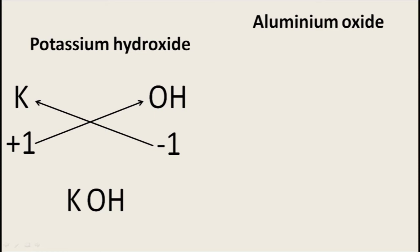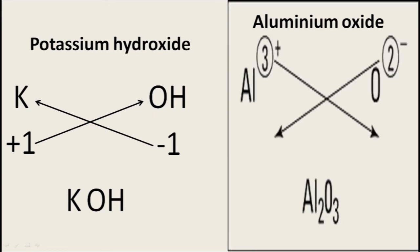Aluminium oxide: aluminium is represented by Al with charge +3, and oxide O has charge -2. By the crisscross method, exchanging charges, aluminium takes 2 and oxide takes 3. Therefore Al₂O₃ is the molecular formula of aluminium oxide.